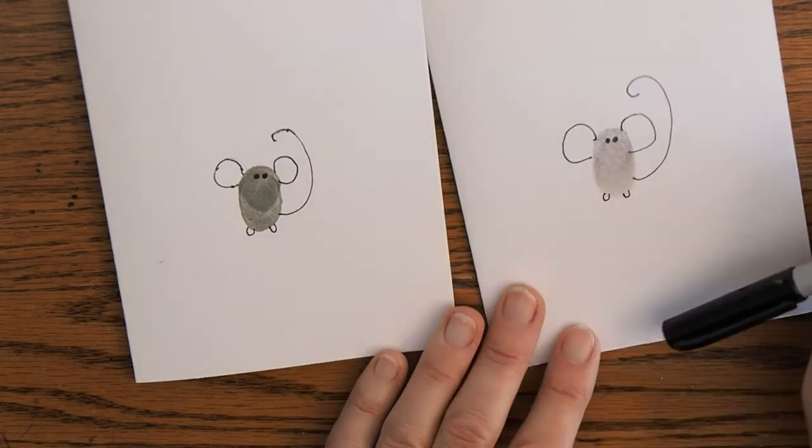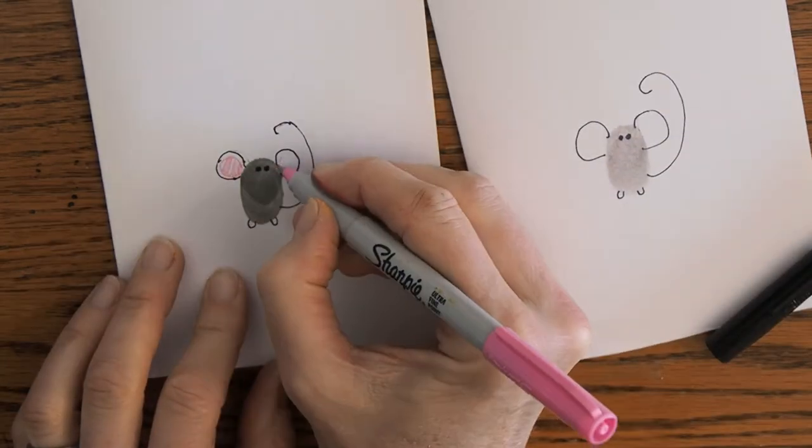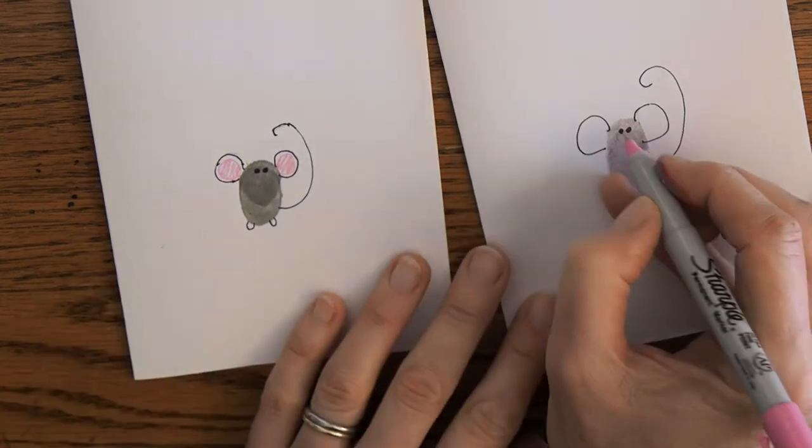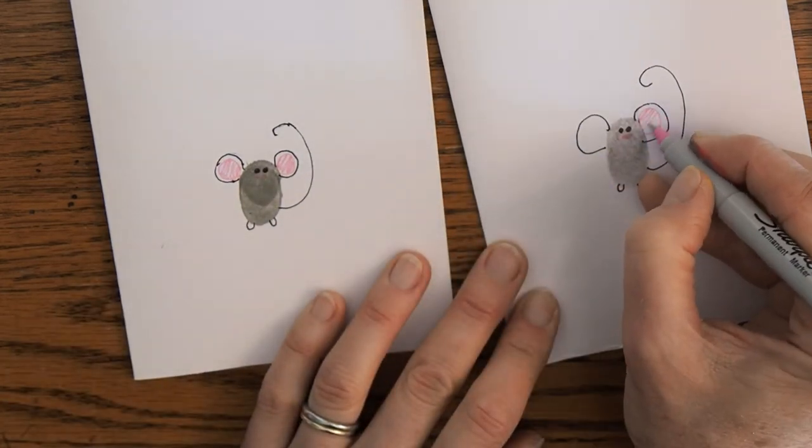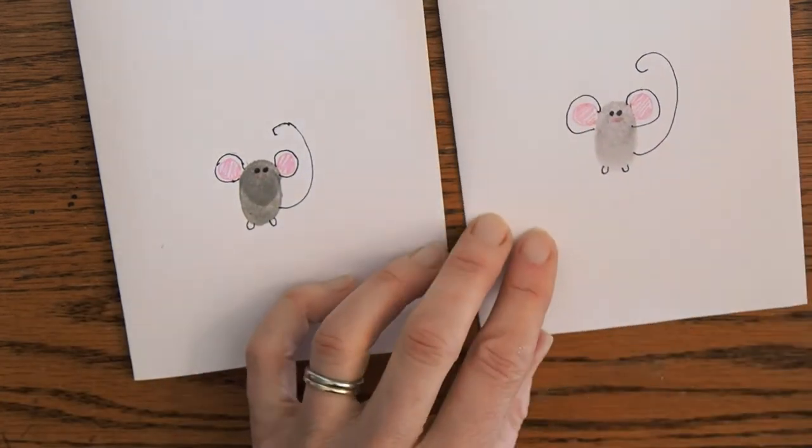And to embellish them a little bit I'm going to get some pink color in his little ears and his nose a little bit pink. Oh and we forgot the whiskers so got to put some whiskers on him.